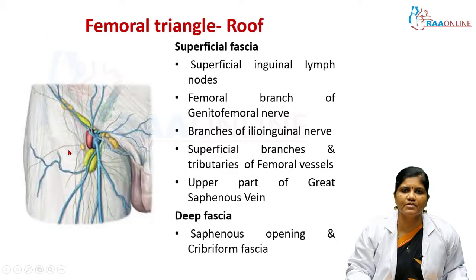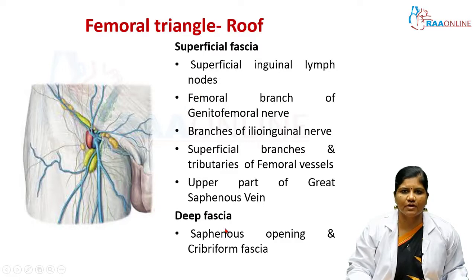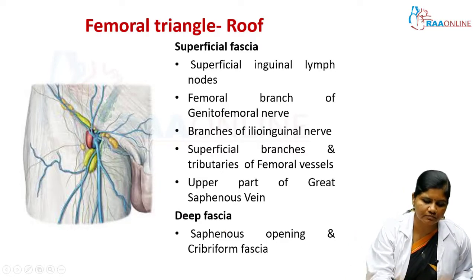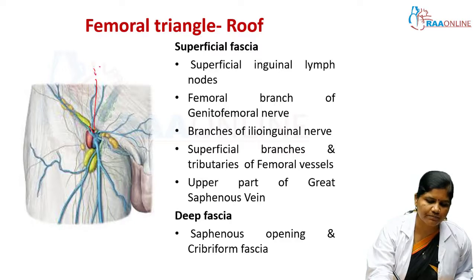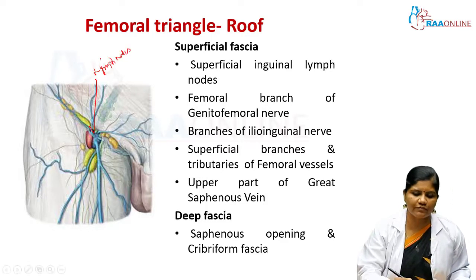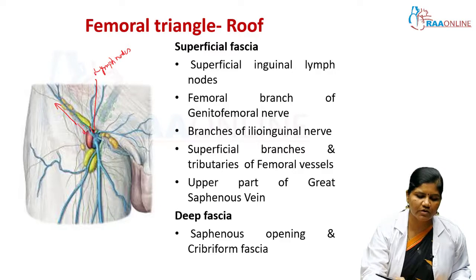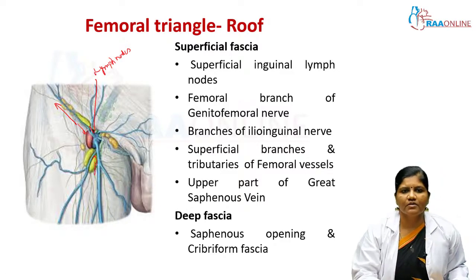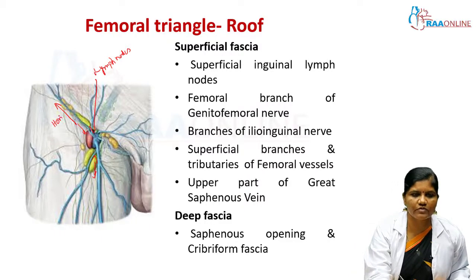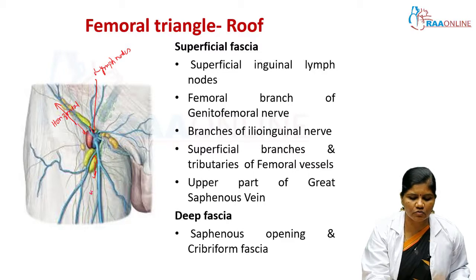The roof structures: just beneath the skin there is a superficial fascia, and deep to that there is a deep fascia. In the superficial fascia we can see the superficial group of lymph nodes, arranged in the horizontal direction just below the inguinal ligament, as well as just lateral to the femoral vein. The vertical group of lymph nodes lies lateral to the femoral vein.